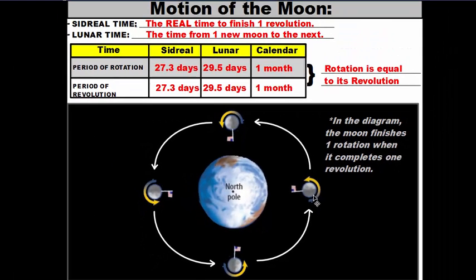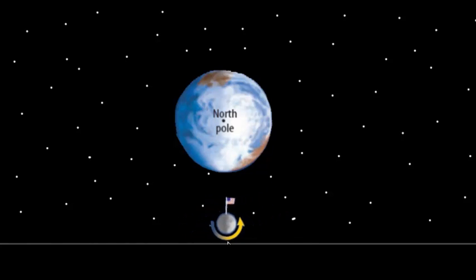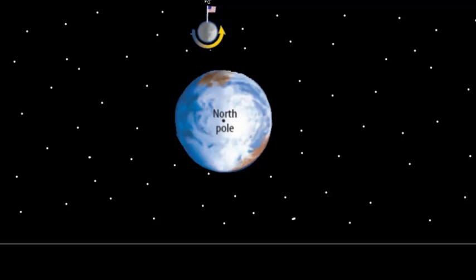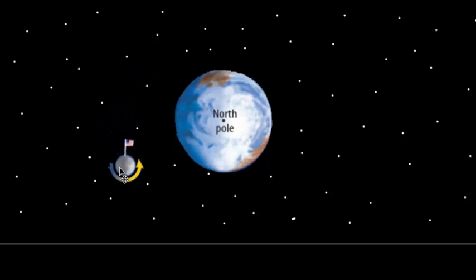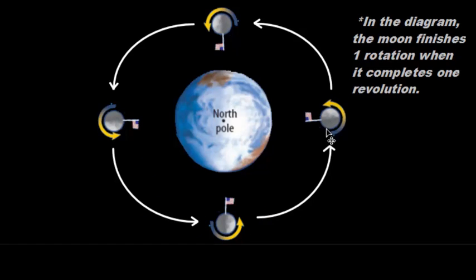Now let's see what it would look like if the moon didn't rotate as it revolved around the earth. Here we have the earth and the moon with a flag. As the moon goes through its motions, the flag initially points toward the earth, but since we're not rotating the moon, the flag will no longer point toward the earth — it goes to the opposite side and we can't see it. As the moon continues around we start to see the flag again. This comparison backs up the idea that the rotation speed equals the revolution speed.